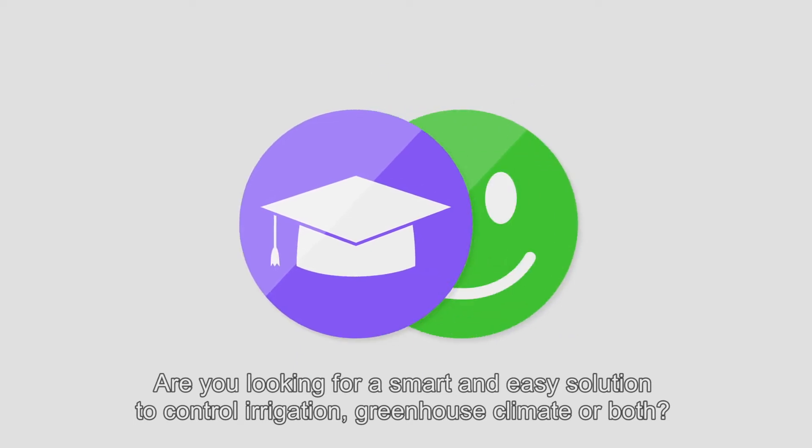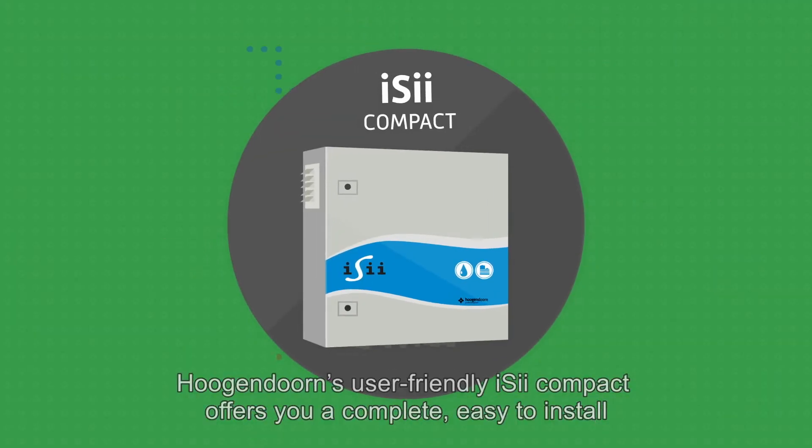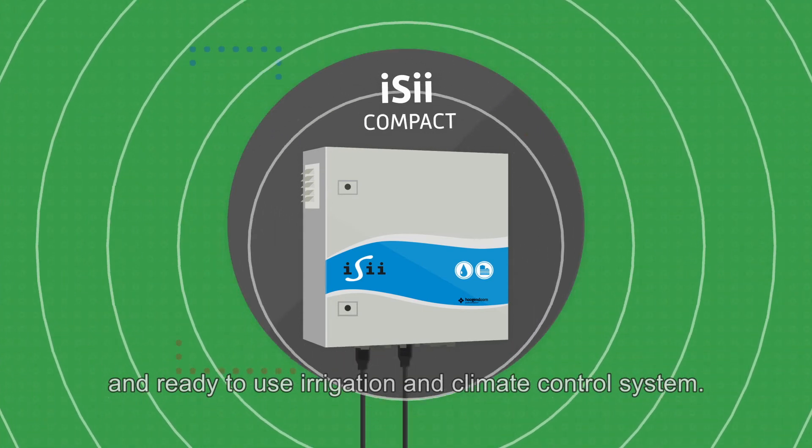Are you looking for a smart and easy solution to control irrigation, greenhouse climate or both? Hogan Dawn's user-friendly Easy Compact offers you a complete, easy-to-install and ready-to-use irrigation and climate control system.